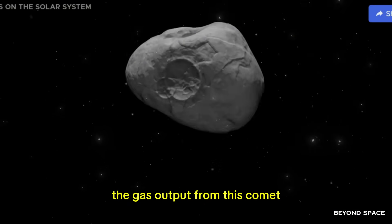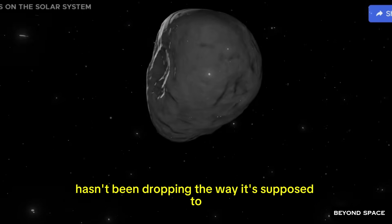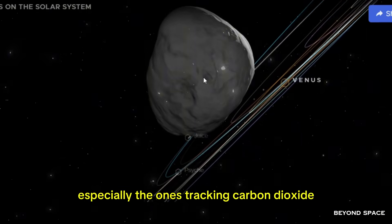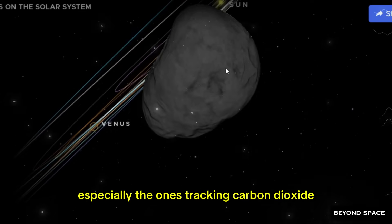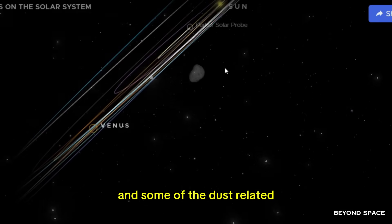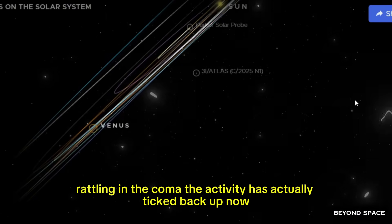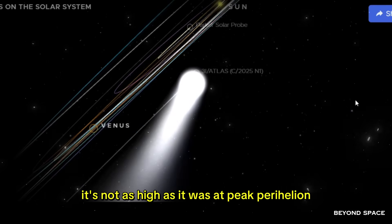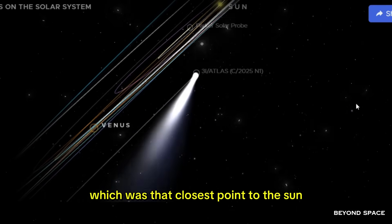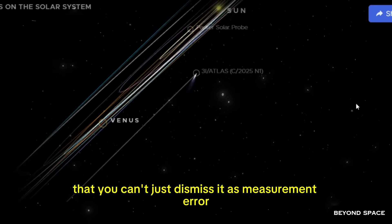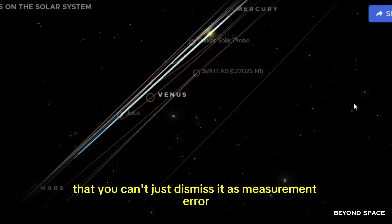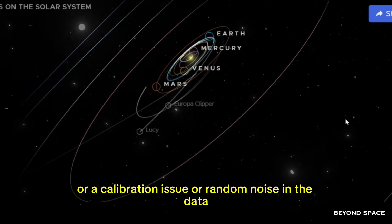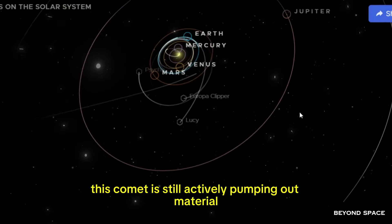The numbers actually went up. The gas output from this comet hasn't been dropping the way it's supposed to. In fact, when you look at certain specific measurements, especially the ones tracking carbon dioxide and some of the dust-related scattering in the coma, the activity has actually ticked back up.